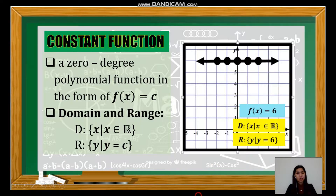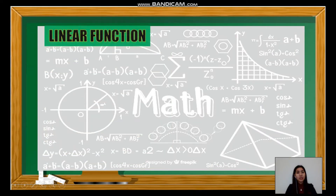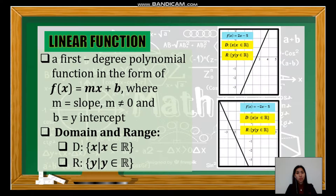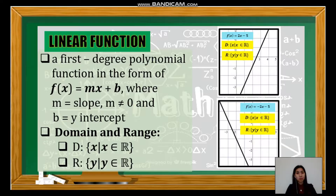The next is the linear function. It is defined as a first degree polynomial function of the form f(x) = mx + b, where m is the slope and it cannot be equal to zero, and b is called the y-intercept. The domain and range of any linear function are both the set of real numbers.